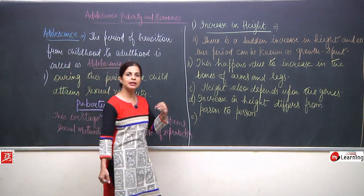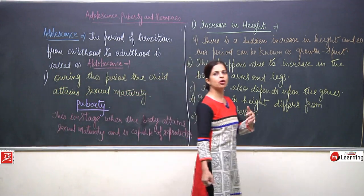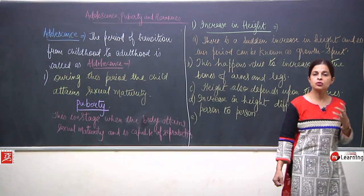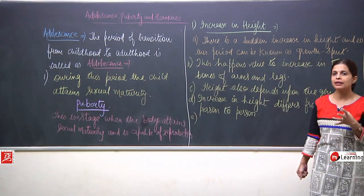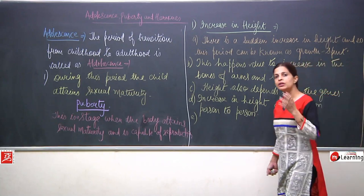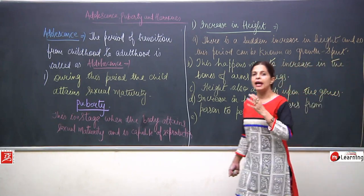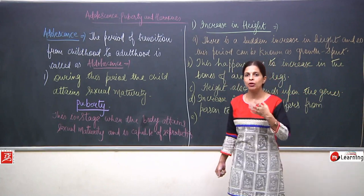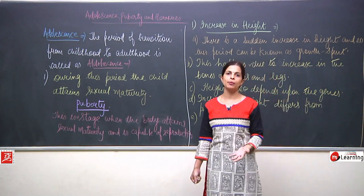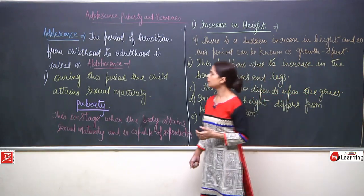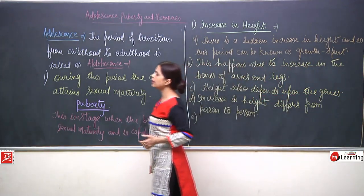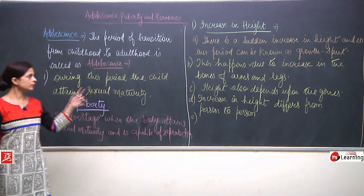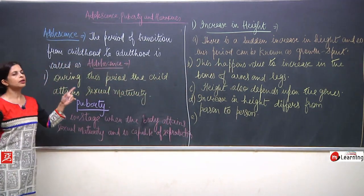A child who is in this stage needs to be given a lot of carbohydrates, proteins, and vitamins so that the body can get proper nutrients and by absorbing all these nutrients, the body can show proper growth. Now we will talk about the second characteristic feature.